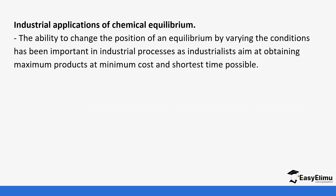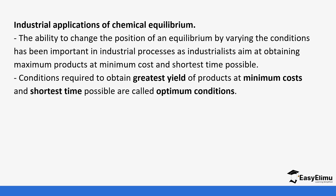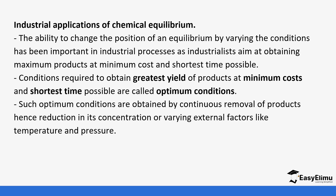Industrial application of chemical equilibrium: the ability to change the position of an equilibrium by varying conditions is important in industrial processes, as industry aims at obtaining a maximum product at minimum cost in the shortest time possible. Conditions required to obtain the greatest yield of product at minimum cost and shortest time are referred to as optimum conditions. Such optimum conditions are obtained by continuous removal of products, reducing concentration, or varying external factors like temperature and pressure.